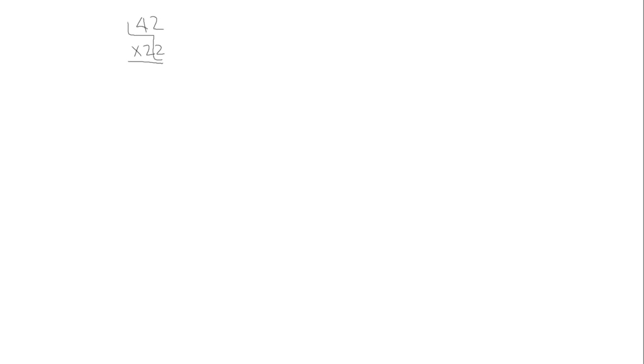Let's start with 42 times 22. As we've seen before, we can think of this as really two separate problems. The first one is 42 times 2, and the second one is 42 times 20. So we're multiplying the first factor by both of the units in the second factor. For 42 times 2, we can use the distributive property, and we can think of this as 2 times 2 plus 40 times 2.